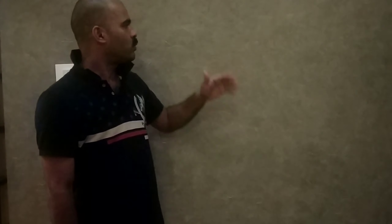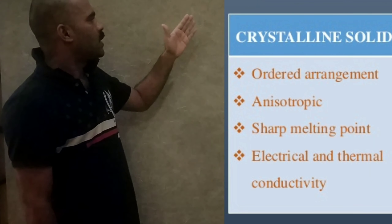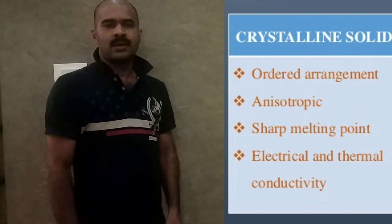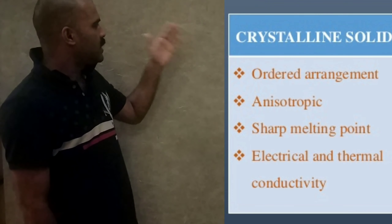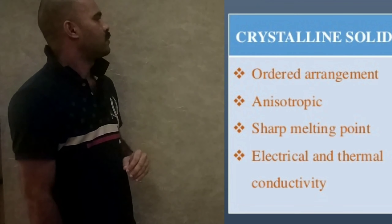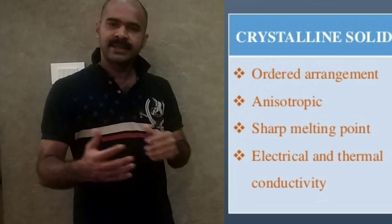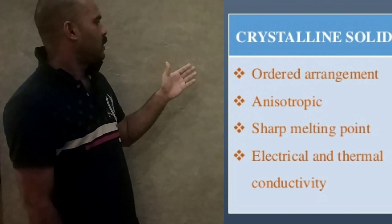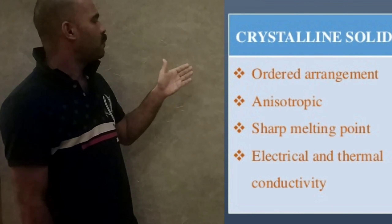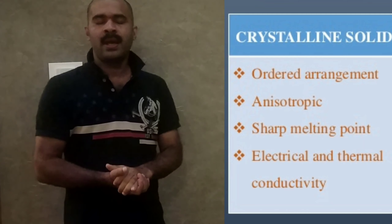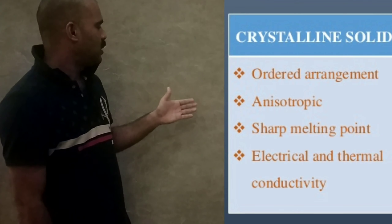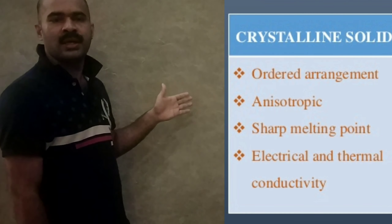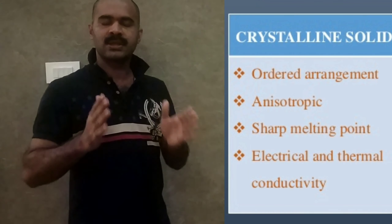The important properties of crystalline solids are: first, the constituent particles are regularly arranged; second, it is anisotropic — we will discuss what anisotropic means later; third, in crystalline solids there is a sharp and definite melting point; and fourth, crystalline solids are conductors of electricity and heat. These are the important properties of crystalline solids.